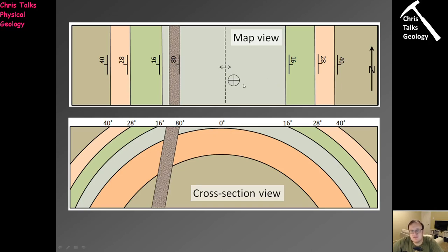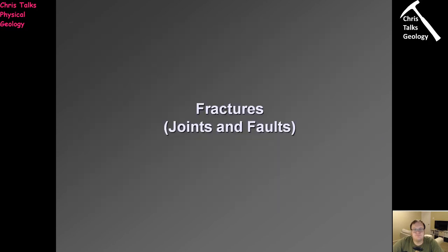There is also the horizontal bedding symbol — a circle with a cross — which tells us that right at the hinge of the fold the bedding is horizontal, so the dip would be zero. We also have the fold axis, which is simply a line. And there's a two-dimensional plane called the axial plane. That was a very quick run through ductile deformation.